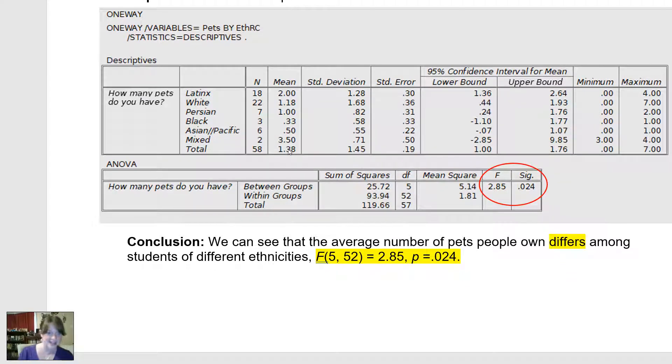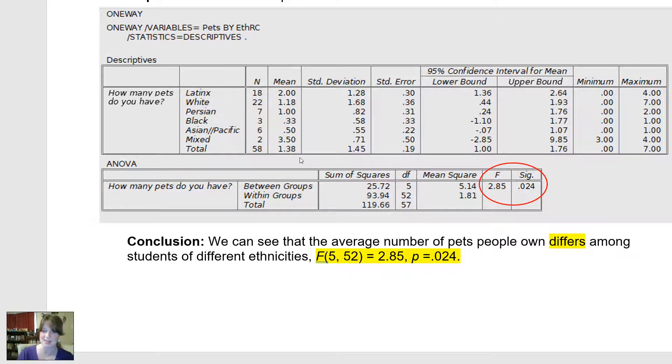Now, I don't know where the differences are, though. I can sort of eyeball the means and see the Latinx students have the most pets... Oh no, mixed students have the most pets, and black students have the least pets. But I don't know exactly if all of these differences are statistically significant. So I'm going to need to do some follow-up t-tests.